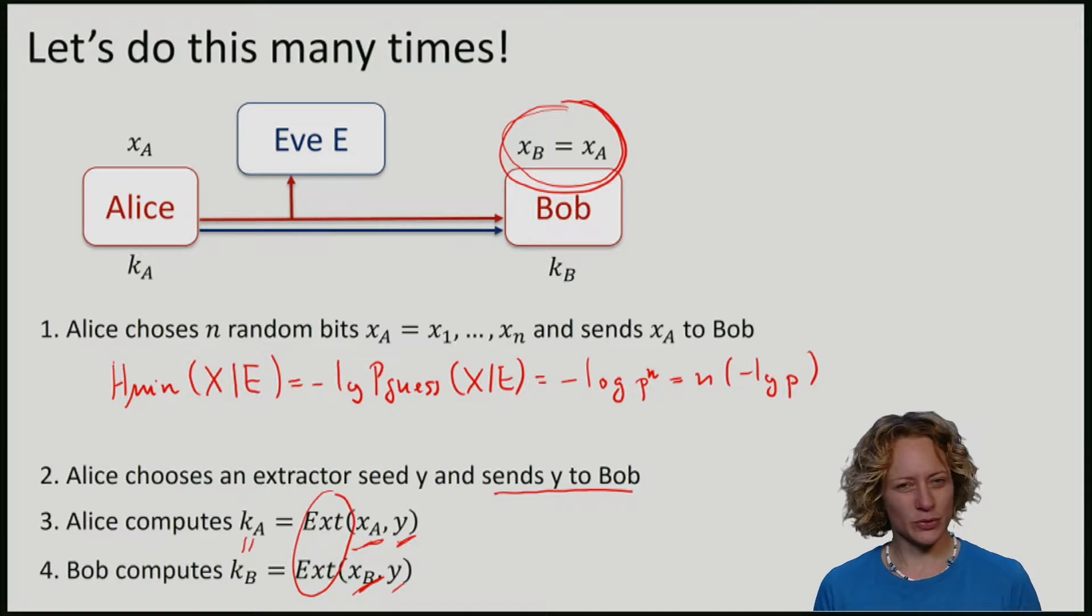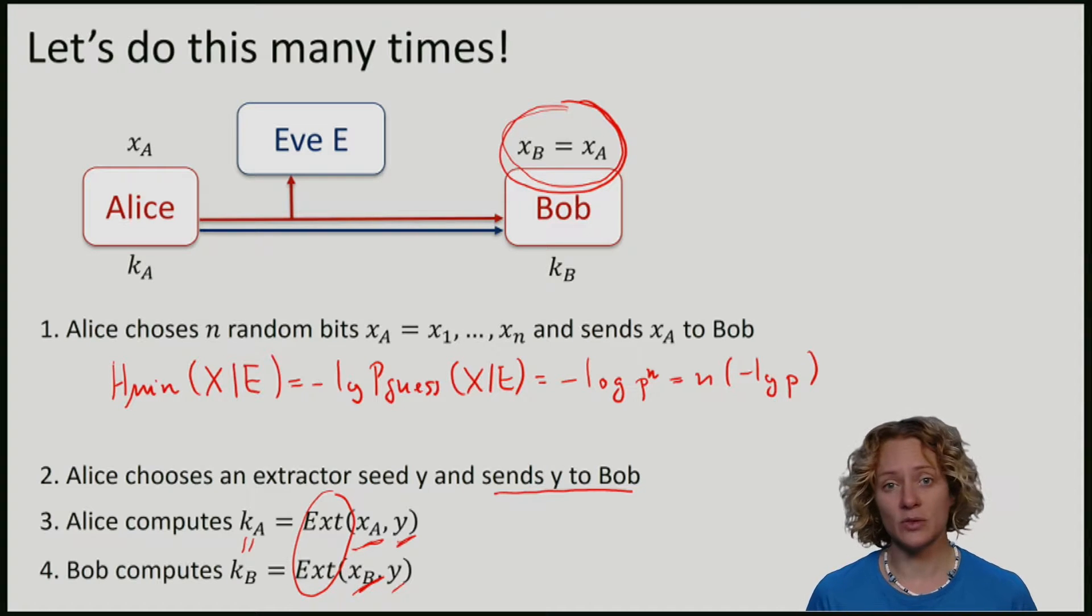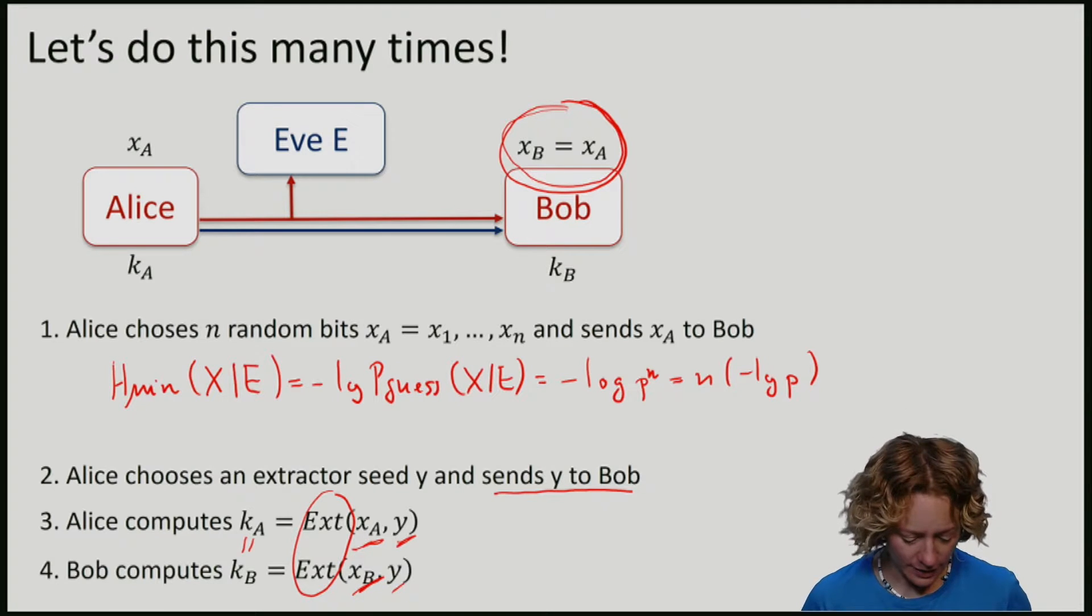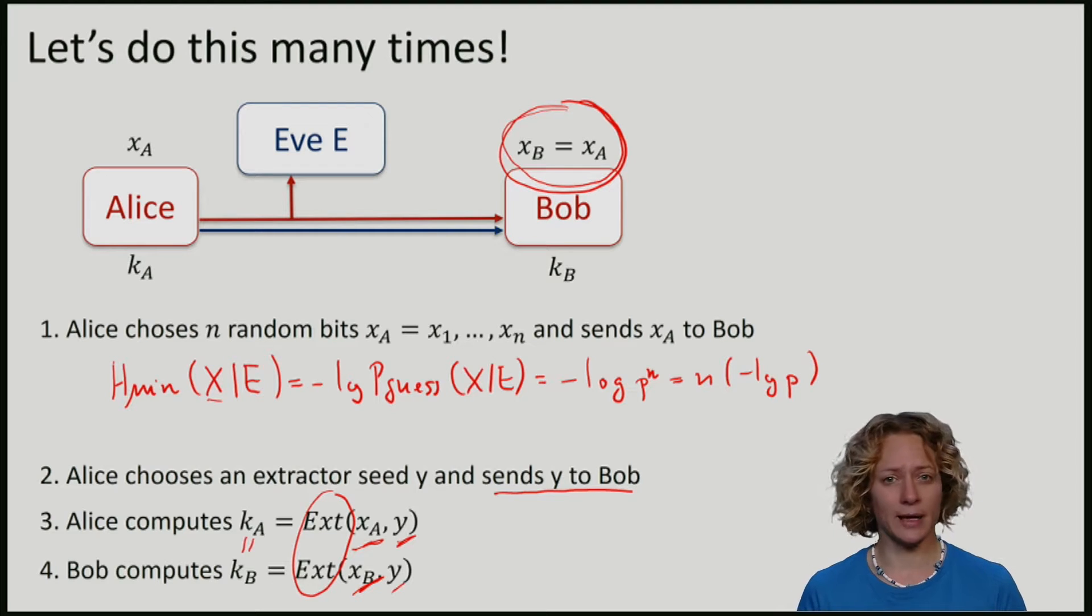So now why is this protocol secure? Remember randomness extraction in the context of QKD, also often called privacy amplification. Alice can use a randomness extractor to turn a somewhat random string x into an almost perfectly random string k. And you've already learned how many bits of key Alice can produce.